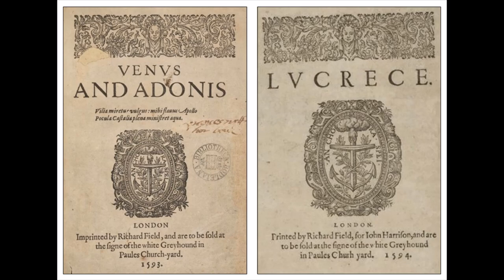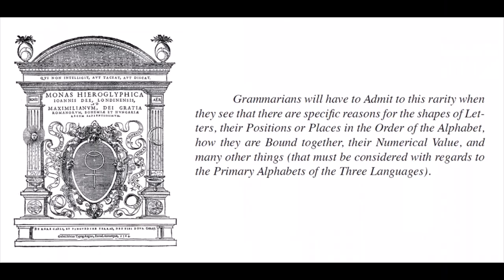It all begins with the first two published works of William Shakespeare: Venus and Adonis, published in 1593, and Lucrece, the following year. I've covered these poems and their dedications in other videos, including some of what I'm about to show here, but I recently figured out something that I had previously overlooked.